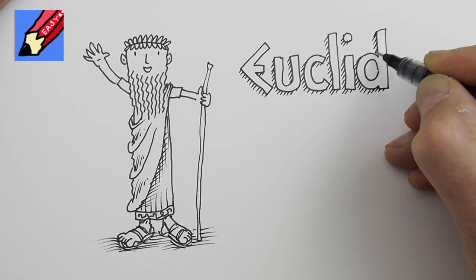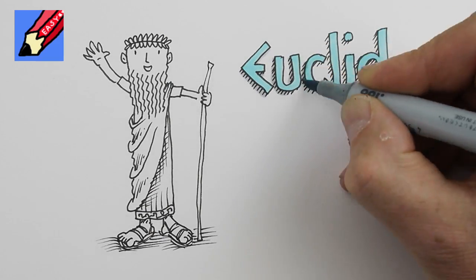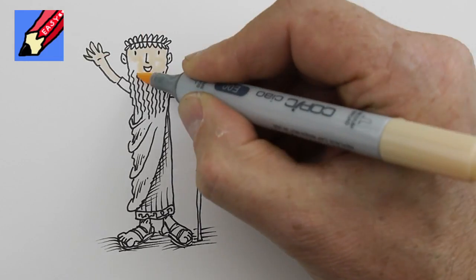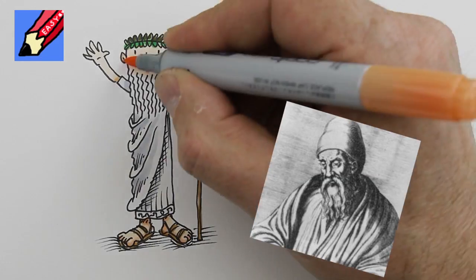Now he looked nothing like this drawing really, this is just my idea of how he looked. Over a thousand years after he died, someone else thought he might have looked like this, but I prefer the way that I draw him. He looks more like an ancient Greek.